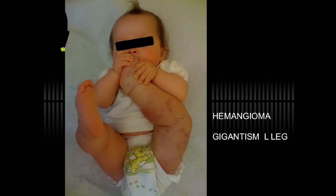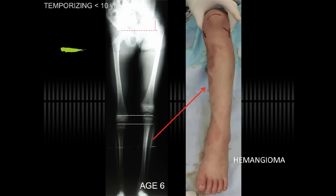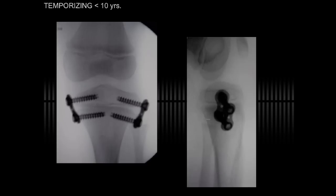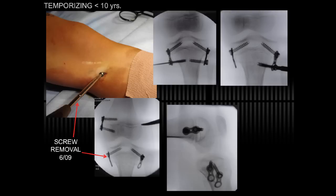On the other hand, this infant with hemangioma and gigantism is headed for many surgical procedures and many problems. By age almost five she presented with left hip pain and a four centimeter discrepancy. She has long leg dysplasia on the left, and the projected discrepancy at maturity was closer to seven centimeters. The options would be to lengthen the normal leg, which is not logical or safe, or to shorten the involved leg, which is also major surgery. Her hemangioma has principal involvement below the knee with principal discrepancy below the knee. She underwent temporizing restraint of the left proximal tibia first. Two years later the strategy was to remove the metaphyseal screws and add implants to the femur to reduce her overall discrepancy. The metaphyseal screw removal was done percutaneously through very small incisions.